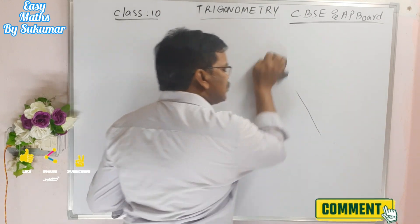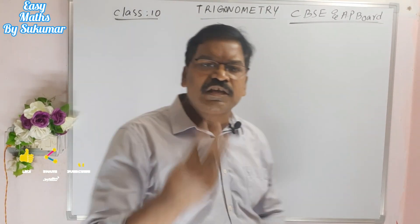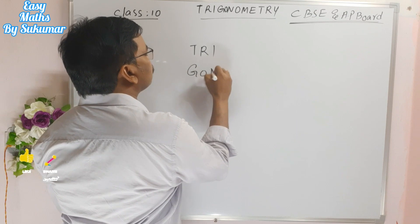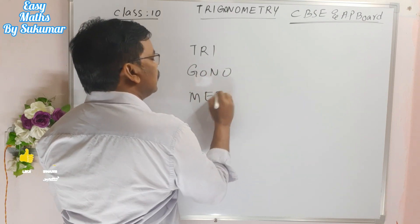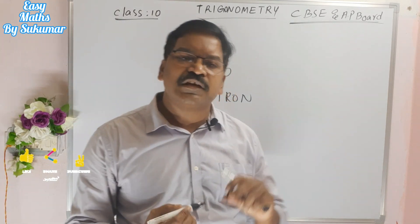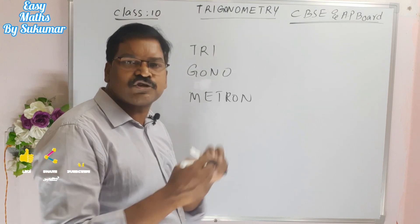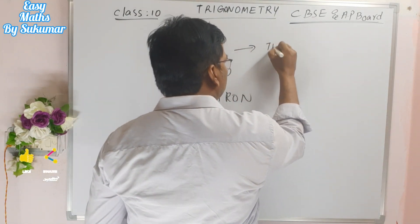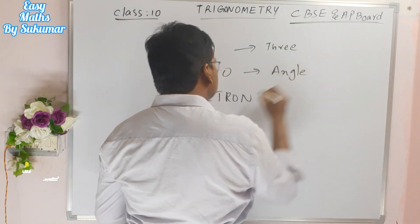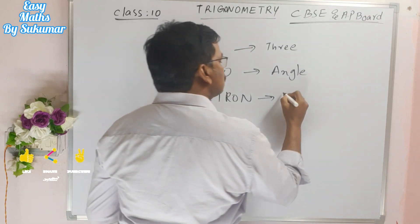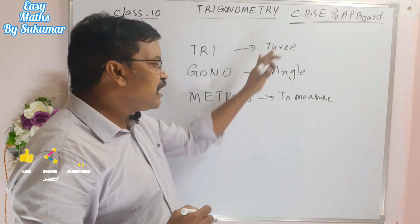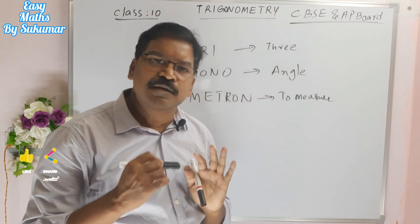Trigonometry is derived from three Greek words: Tri, Gono, and Metron. Tri means three, Gono means angle, and Metron means to measure. So Trigonometry means it's a three-angle measure.